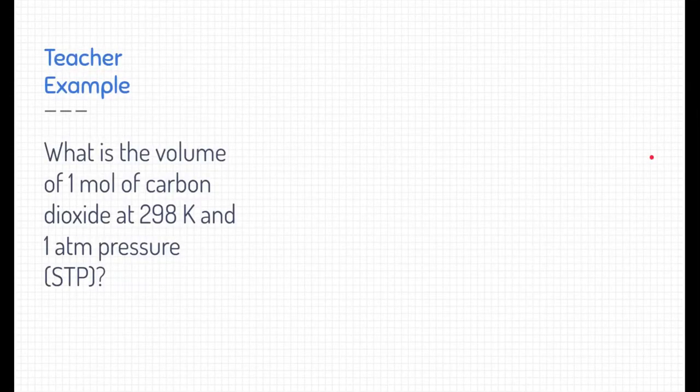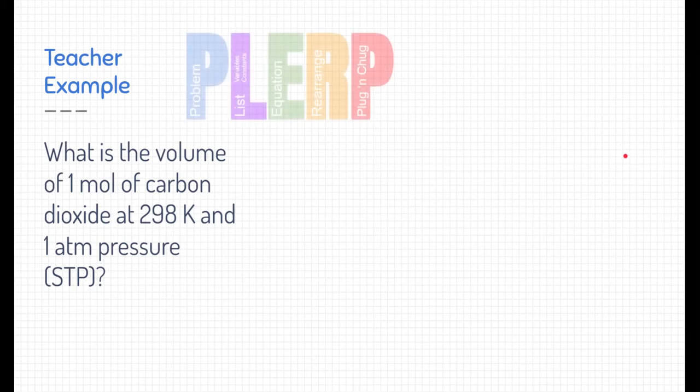All right, so let's actually use the ideal gas law equation. Here is an example. Let's go through it together. Here it says, what is the volume of one mole of carbon dioxide at 298 degrees Kelvin and one atmospheric pressure? I'm going to point out that that is standard temperature and pressure. We didn't need to give you that much information. We could have just said STP, but we're going to put that here just to help us out.